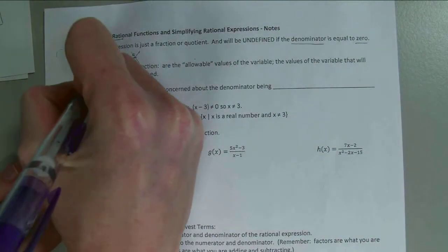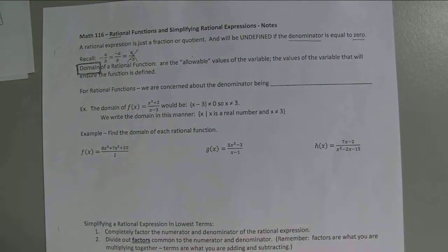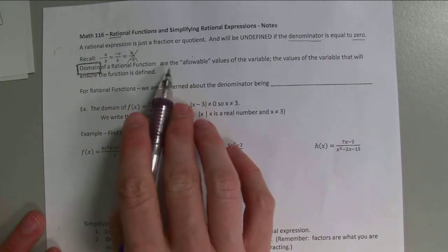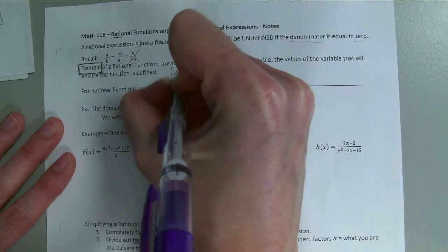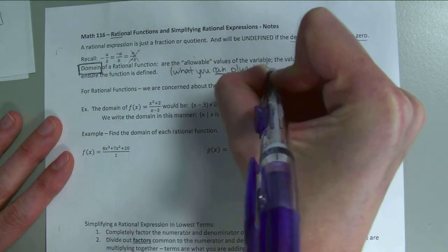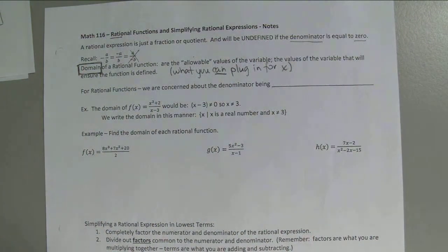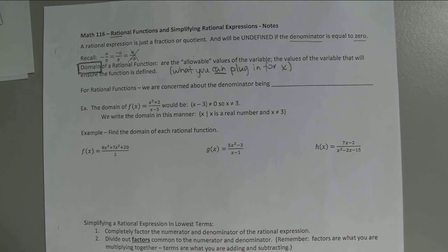So what is the domain? This is a new definition, and honestly I think it's one of the tougher things to understand in this class. The domain of a rational function is all the allowable values of the variable — the values that will ensure the function is defined. Basically, what you can plug in for x. We're concerned about certain values of x that make the denominator zero, which is not good.